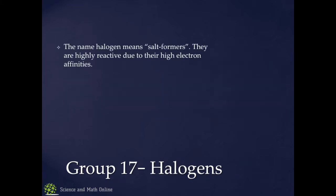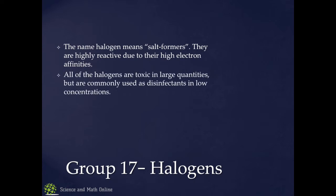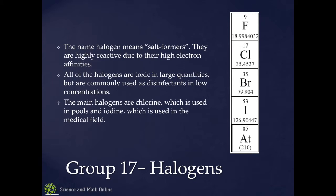Halogens — salt formers. They are highly reactive due to high electron affinity; basically they want to grab electrons and will take them from other things. All of them are toxic, which is why they're used in disinfectants in low concentrations. The main one is chlorine, which is used in pools. Sometimes bromine is used in pools as well and in the medical field.